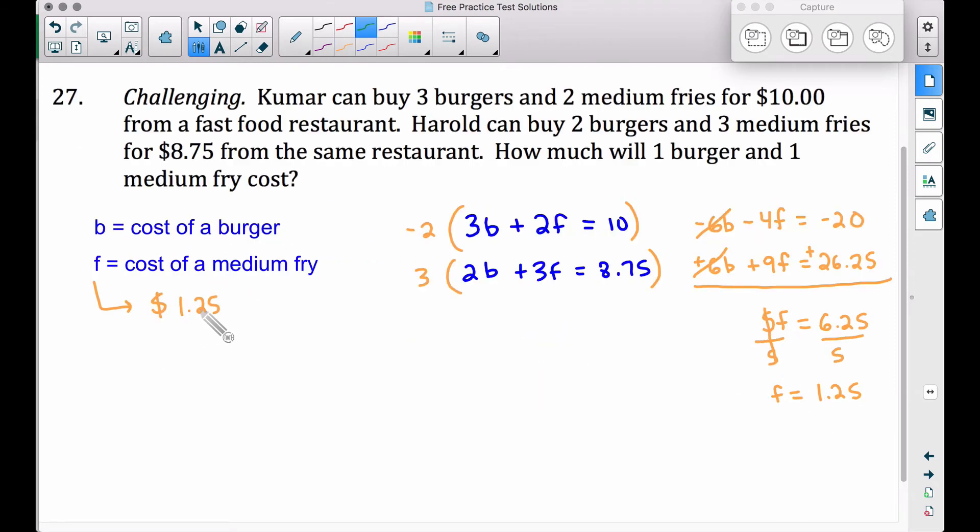Since we know the cost of a medium fry now, if we go back and look at the first sentence for example. Three burgers and two medium fries for 10 bucks, that's this equation here. Three burgers plus two medium fries, well I'm going to take, instead of 2 times f, I'm going to do 2 times 1.25 because we said the cost of a medium fry is $1.25. This is going to be equal to $10 from that first sentence up here.